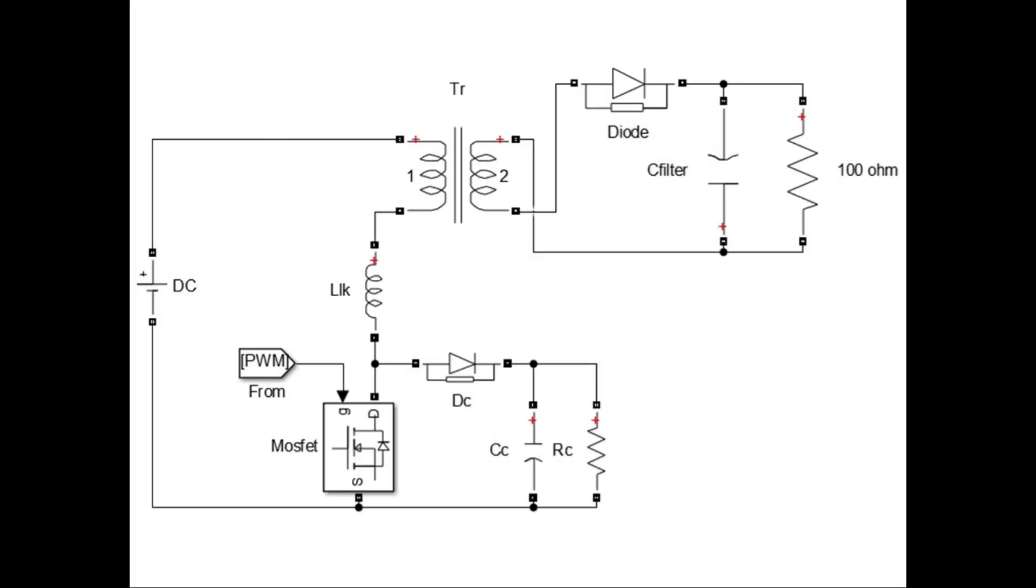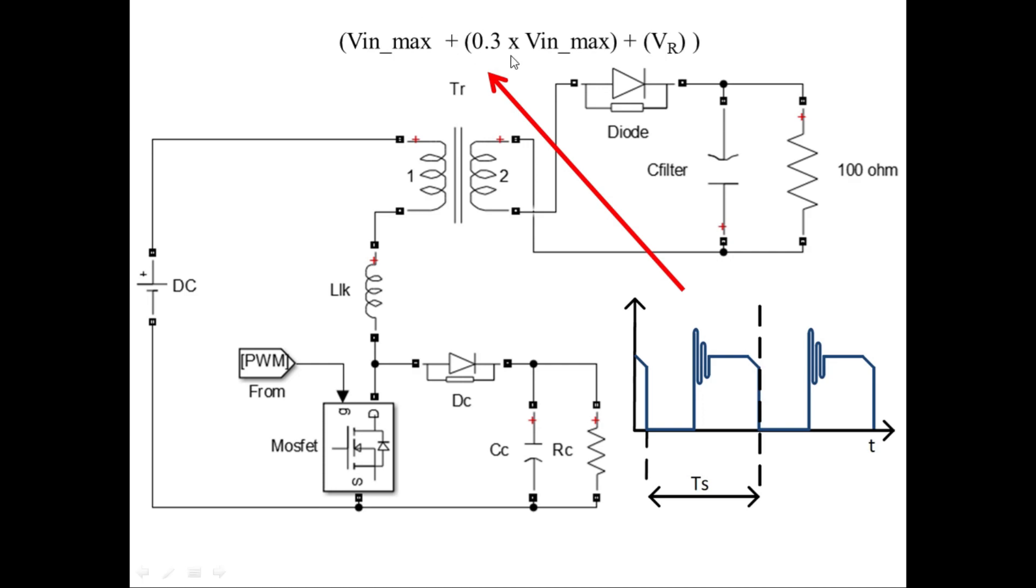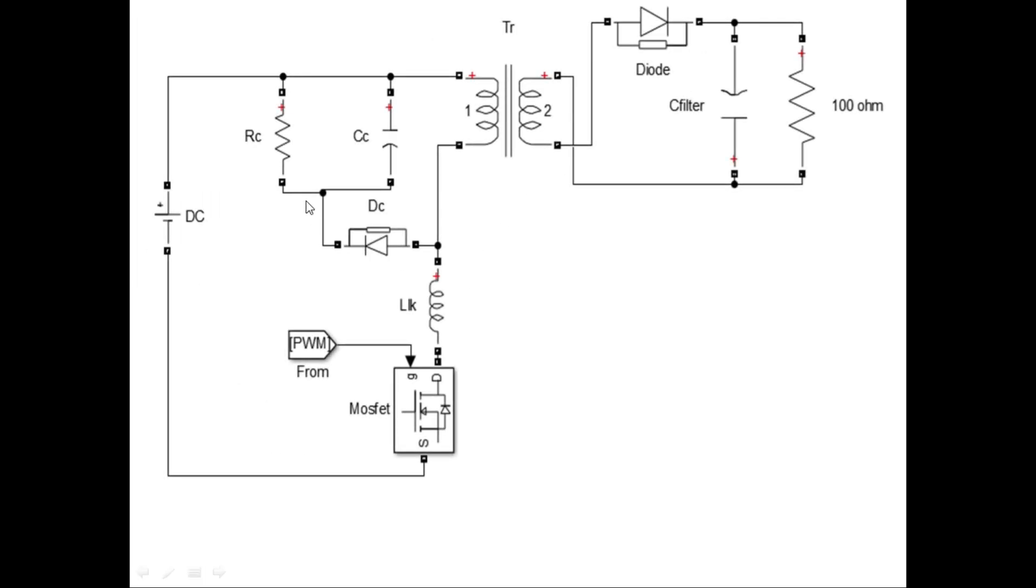Let us investigate how much voltage will be subjected to this snubber network. This voltage will be a summation of maximum input voltage plus 30%, which is due to leakage inductance, along with the reflected voltage. This is given by this equation. On the other hand, if we place the snubber circuit here, only this reflected voltage part will be applied to the network.